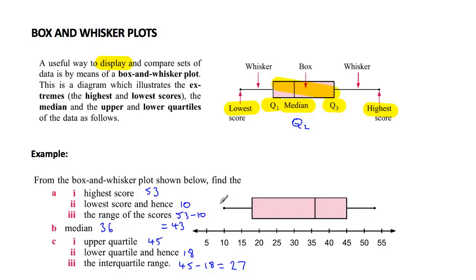Now from these results we can see that the bottom 25% of the scores take values from 10 up to but less than 18. The top 25% of the scores, they take values from but not including 45 up to 53. So the middle 50% of the scores lie between 18 and 45.